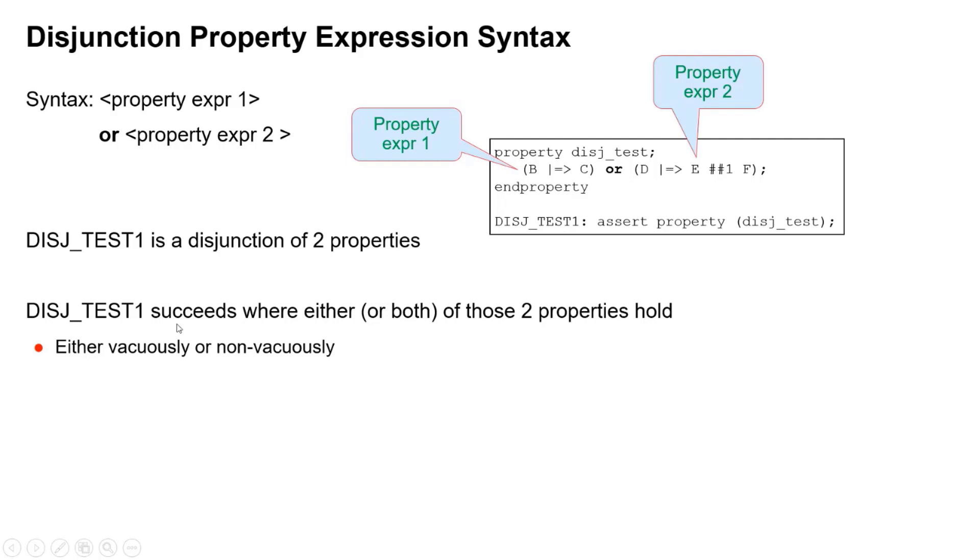And that success of the property is either vacuous or non-vacuous. So clearly any property with implication passes under two circumstances here for this expression on the left of the OR operator. If B is true and C is true the next cycle, that's a non-vacuous pass. If B is false, that's a vacuous pass.